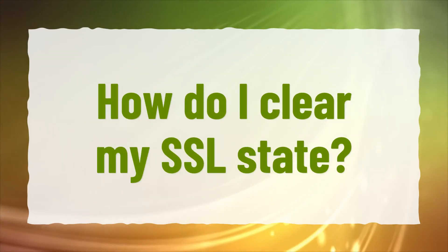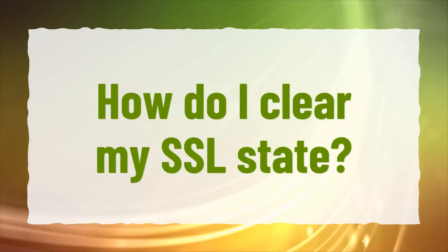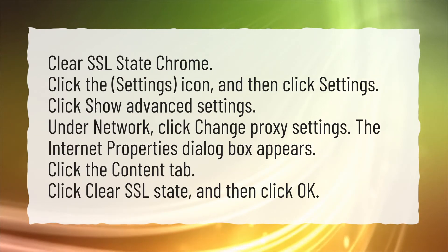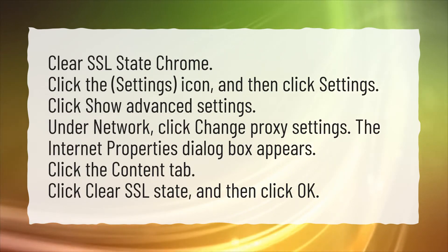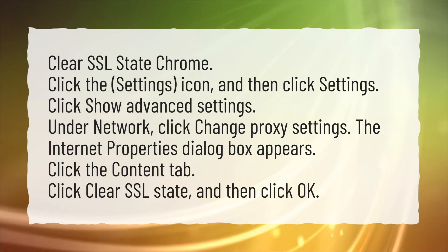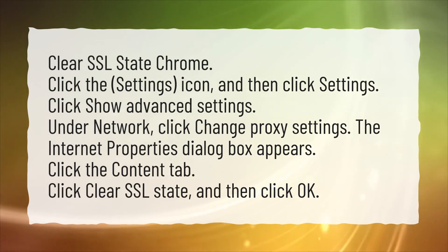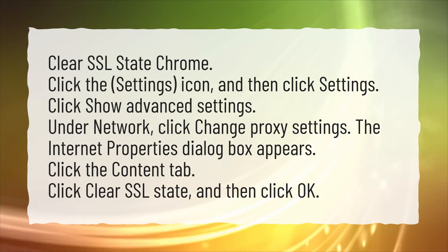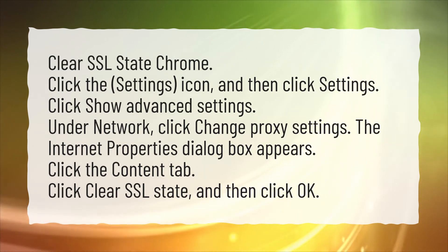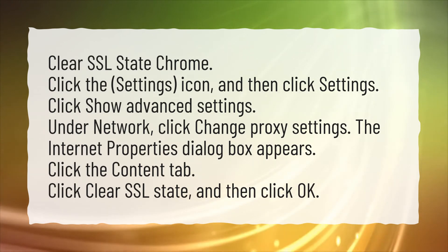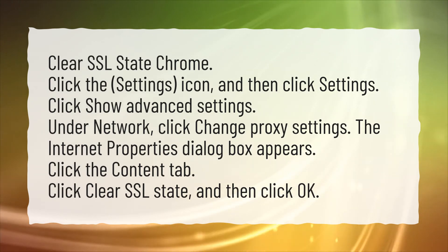How do I clear my SSL state? Clear SSL state in Chrome: Click the Settings icon, and then click Settings. Click Show Advanced Settings. Under Network, click Change Proxy Settings. The Internet Properties dialog box appears. Click the Content tab. Click Clear SSL state, and then click OK.